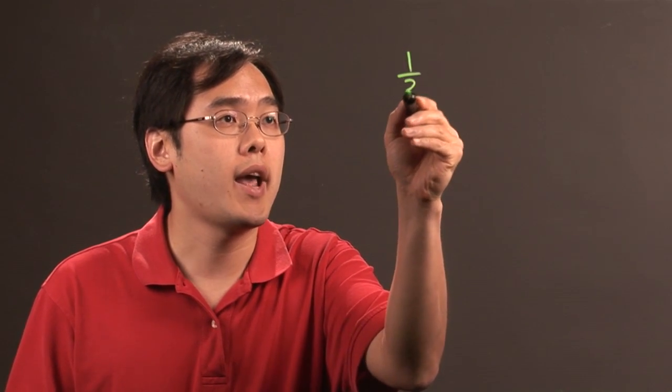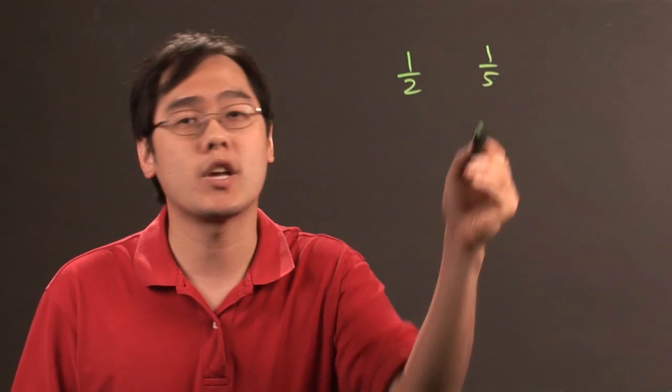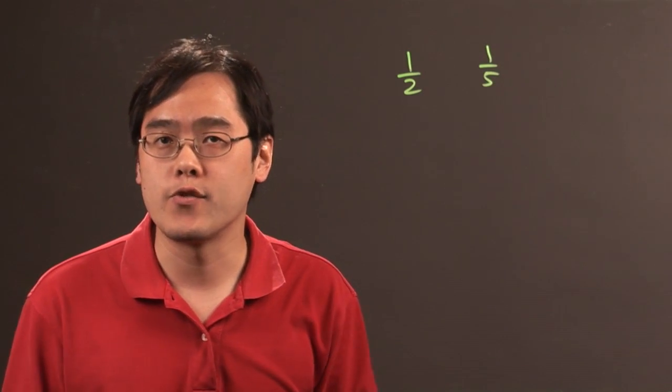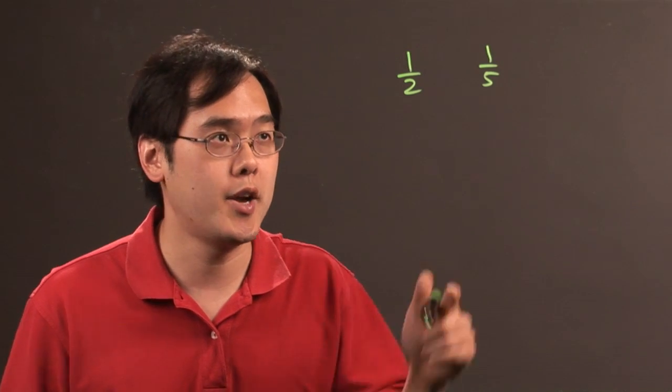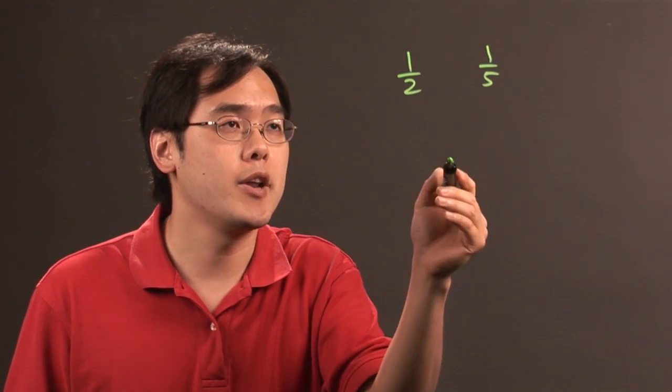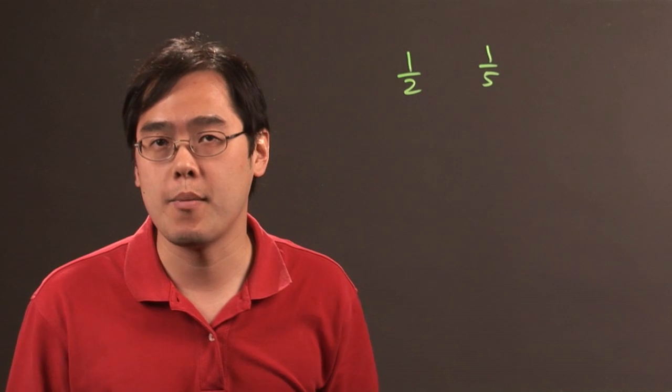So, for example, if you have one-half and one-fifth, and you want to compare those, when you're comparing fractions and fractions, the best way to compare them is to determine whether or not they've got the same common denominator. You can't just compare the denominators, per se, but you want to make sure that the denominators are the same.